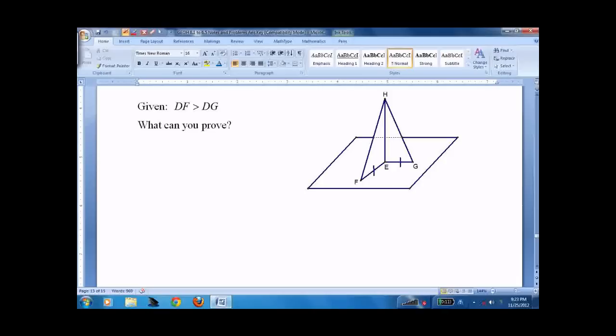Again, try it on your own. See if you can do it. DF is greater than DG. What can you prove? You know this is the same. You know that DF is greater than, you know that this angle is greater than this angle. It's the measure of angle DEF is greater than measure of angle DEG by side side side inequality.